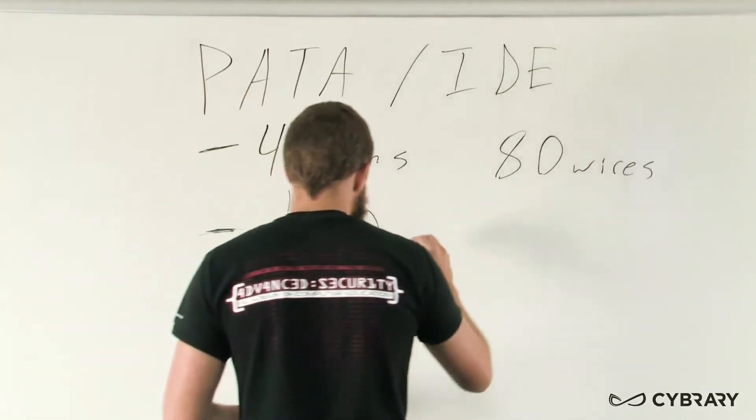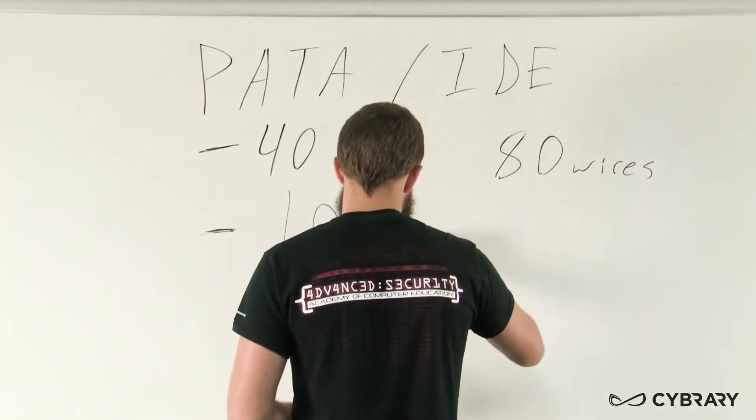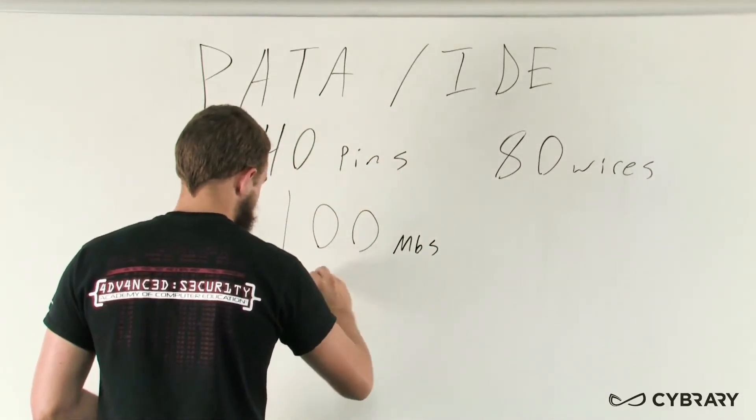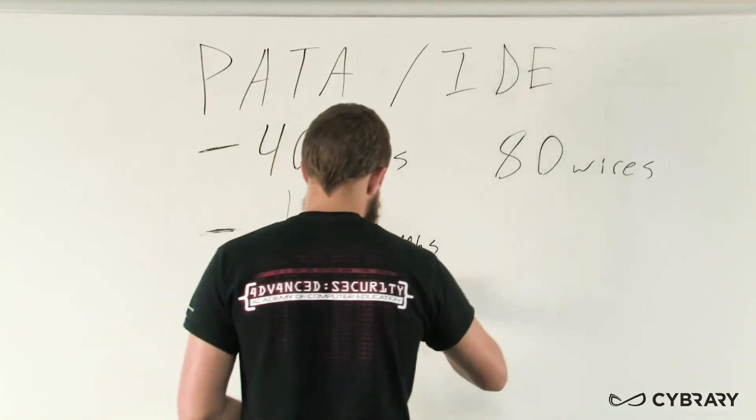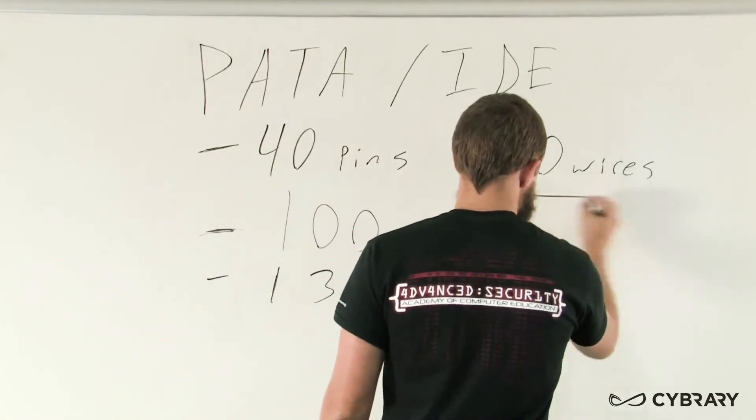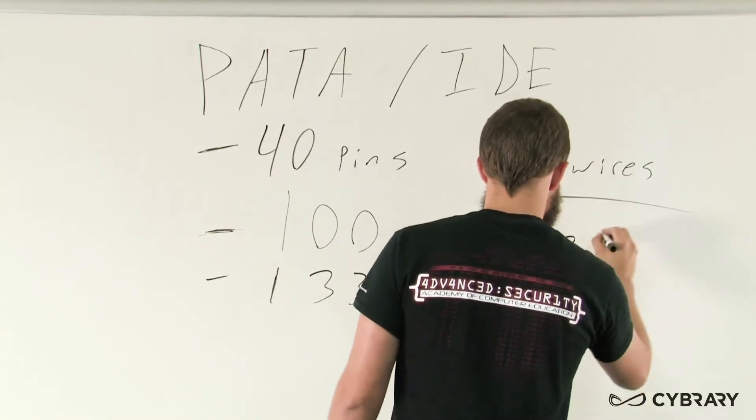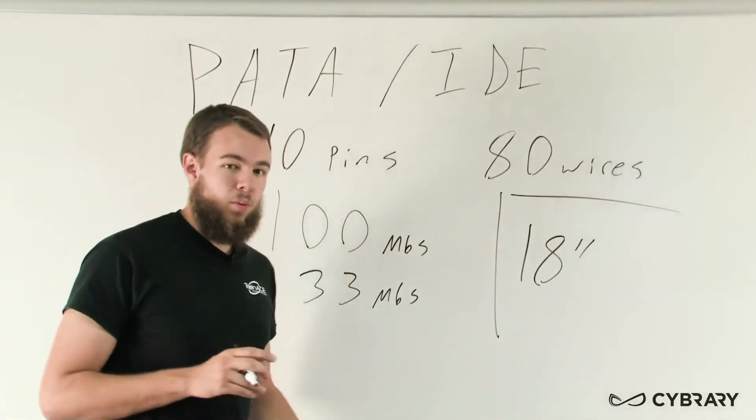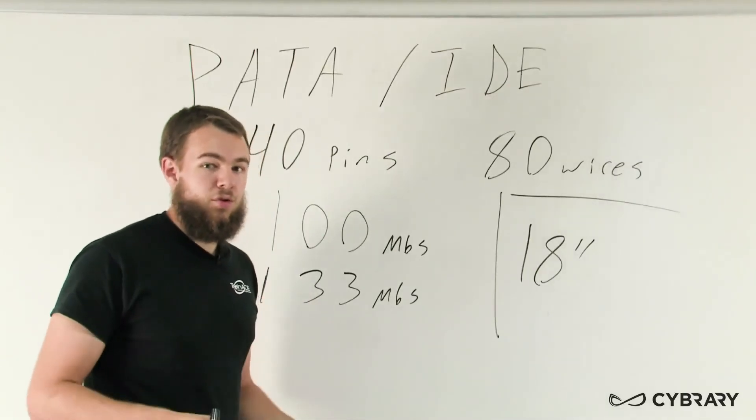IDE has a max speed in two different versions. The first iteration is 100 megabits per second, and the second version is 133 megabits per second. The max length we want to use with IDE cables is 18 inches, so we don't want our device any farther away than 18 inches from the controller.